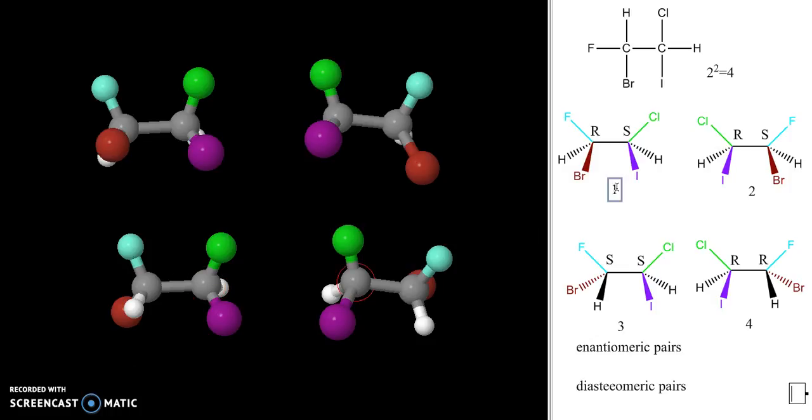Now that I have my four stereoisomers, I can also talk about enantiomers and diastereomers. I've numbered all four stereoisomers. I've got two pairs of enantiomers, my two sets of mirror images: one and two, and three and four. All other possible combinations are diastereomers, because a pair of stereoisomers that are non-enantiomers are diastereomers.